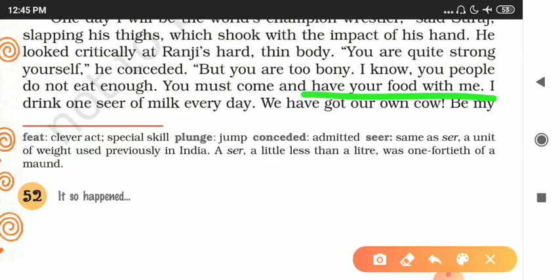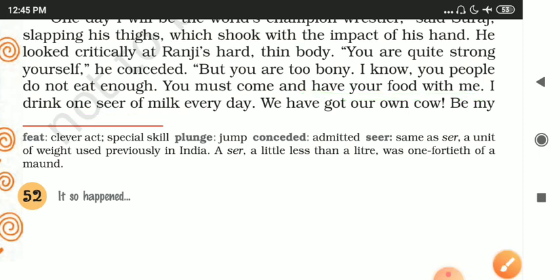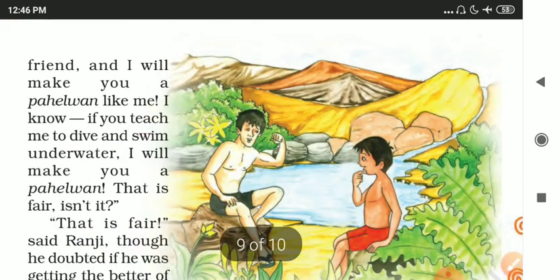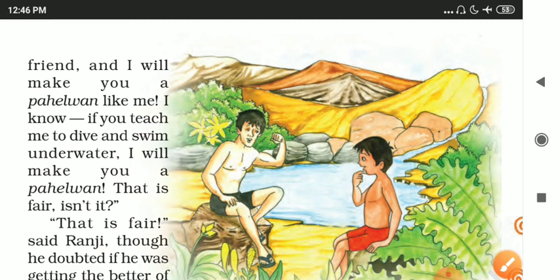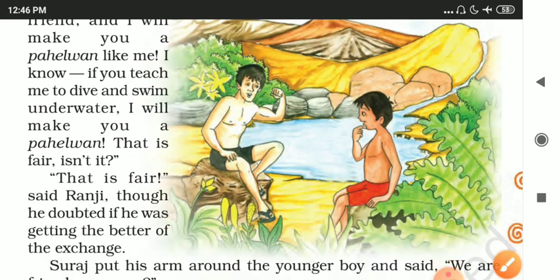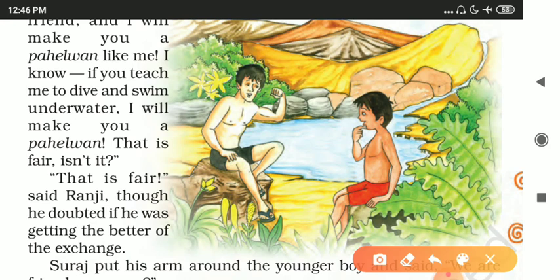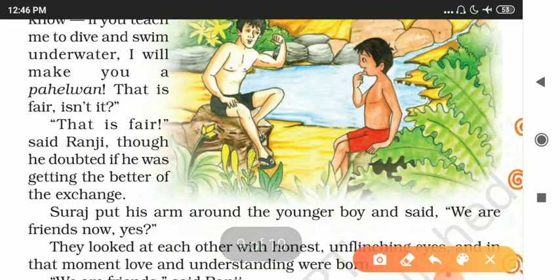'You must come and have your food with me,' said Suraj. 'I drink one seer of milk every day' — one seer means less than a liter — 'We have got our own cow. Be my friend. I will teach you to be a pehlwan like me. If you teach me to dive and swim underwater, I will make you a pehlwan. That is fair, is it not?' 'That is fair,' said Ranji, though he doubted if he was not getting the better of the exchange.